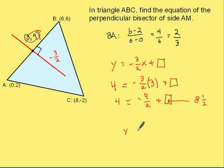So we'll write y equals negative 3 over 2 x plus 8 and a half. If you desperately feel like you need to write this as 17 over 2, feel free. Or if you want to write this as negative 1 and a half, feel free. You can change them all to decimals. I don't really care. I've gotten the equation for the perpendicular bisector of side AM. That's it.